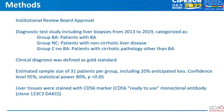Regarding the methodology, we have institutional review board approval. This was a diagnostic test study including liver biopsies from 2013 to 2019, categorized as: Group BA — patients with biliary atresia; Group NC — patients with non-cirrhotic liver disease, such as tumors, focal nodular hyperplasia, choledochal cysts, etc.